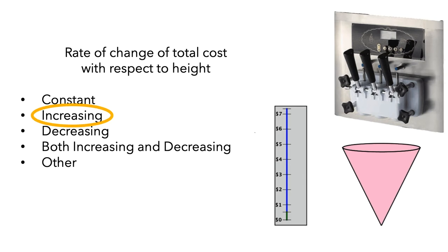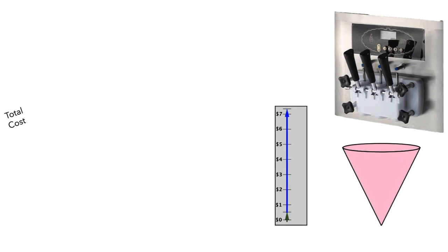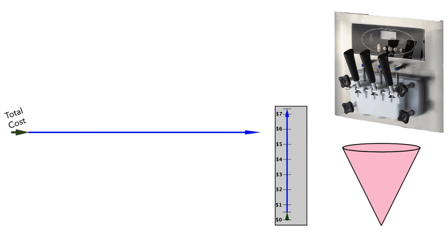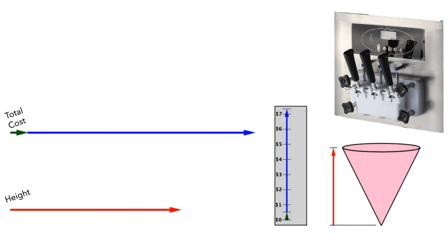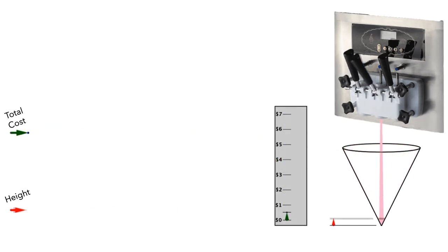Let's think about why this is. First, I'll represent the total cost of the yogurt in the cone. The green arrow represents the cost of the cone itself, and I'll represent the change in the cost using a blue arrow. Next, I'll represent the height of the frozen yogurt in the cone using a red arrow. Let's rewind this to the start of the dispensing. Now I'll show this again. As the animation plays, think about how the height of the yogurt in the cone — the length of the red arrow — and the additional cost — the length of the blue arrow — are changing with respect to each other.